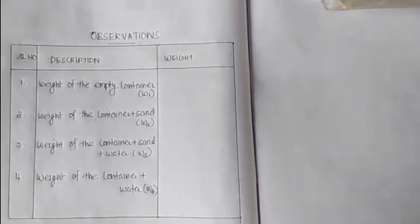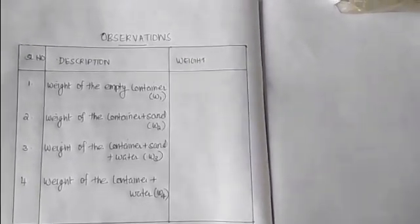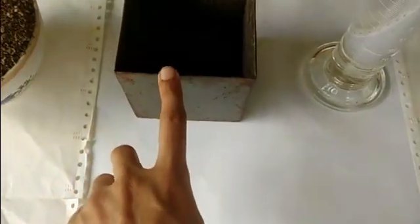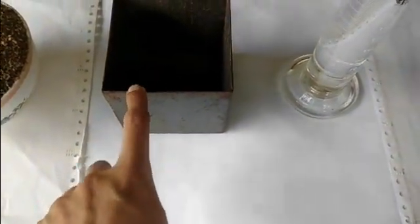You can see here the required observation column. First observation is to find out the weight of empty container. So, take this empty container and note the weight as W1.